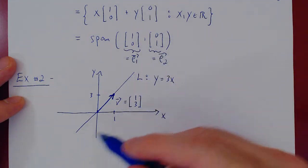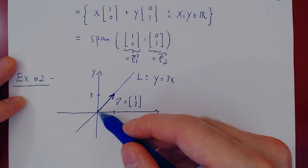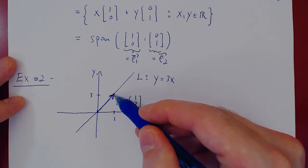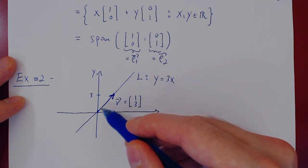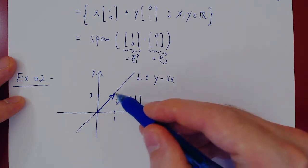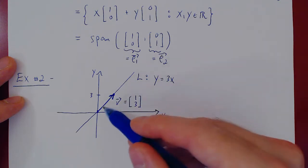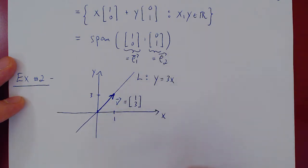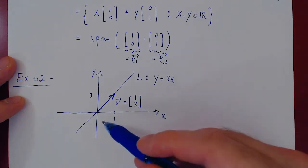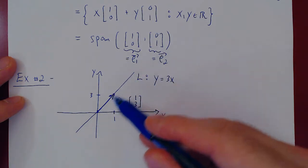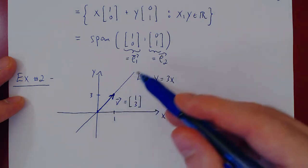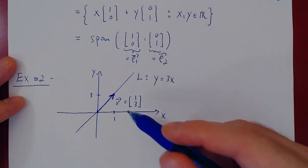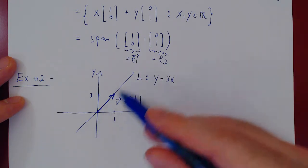If you take all possible multiples of v = (1, 3), you will trace the entire line. Taking 1·v gives one point, 1/2·v gives another, 2v another, and −v another. Every possible multiple of this vector gives every possible point on this line. Therefore, the span of v should equal the line.